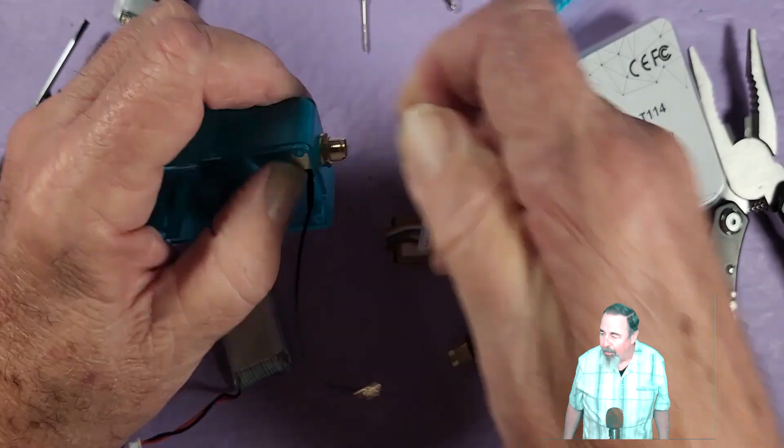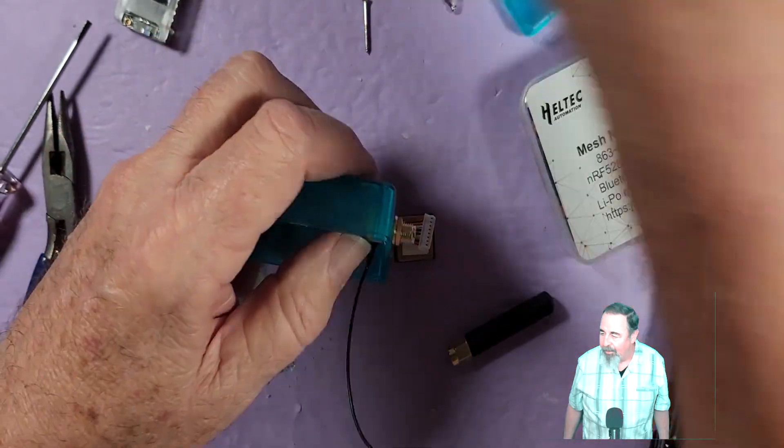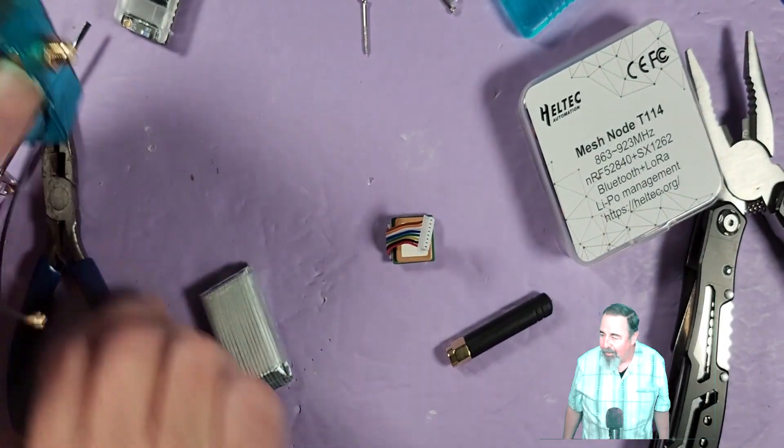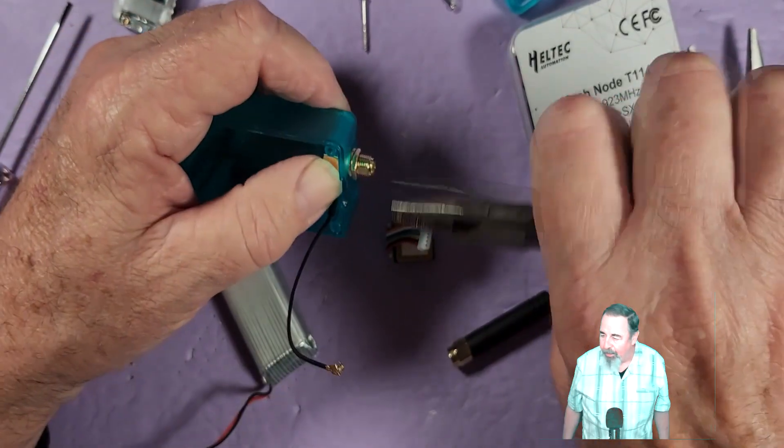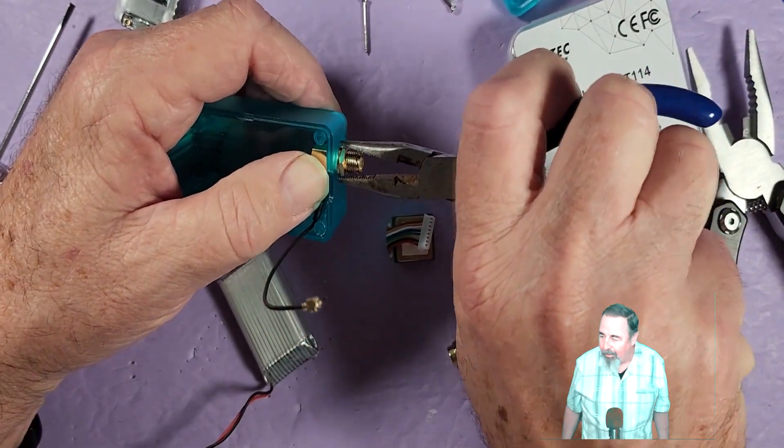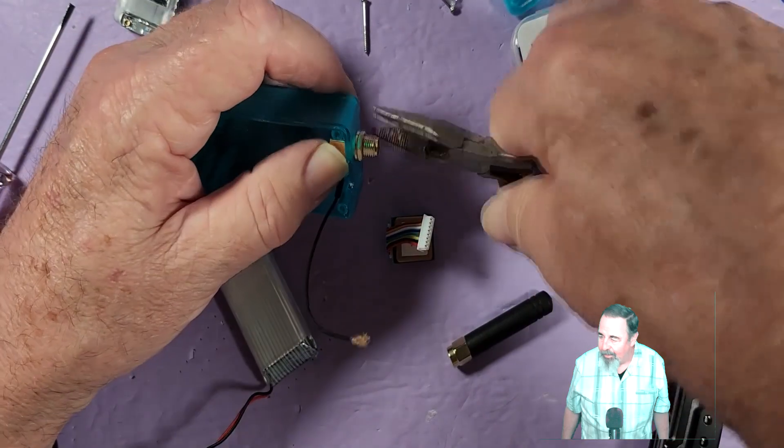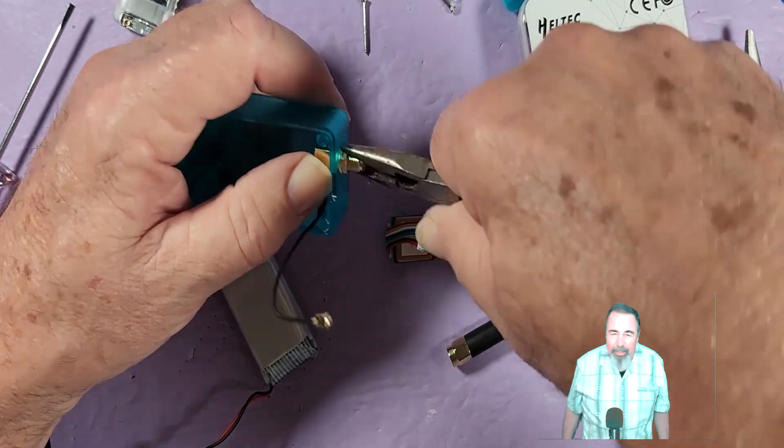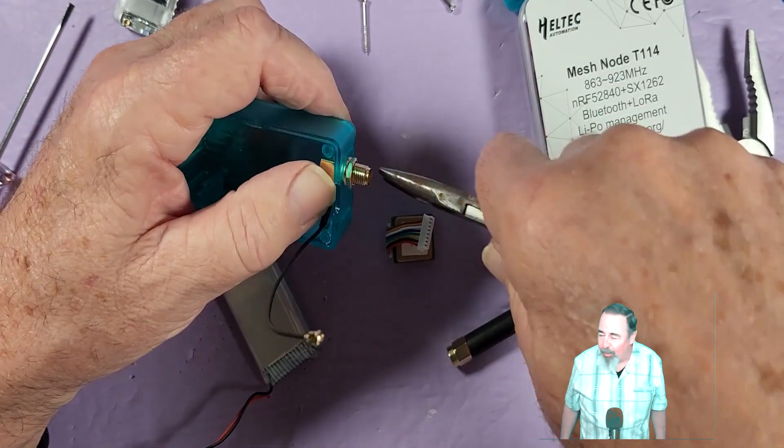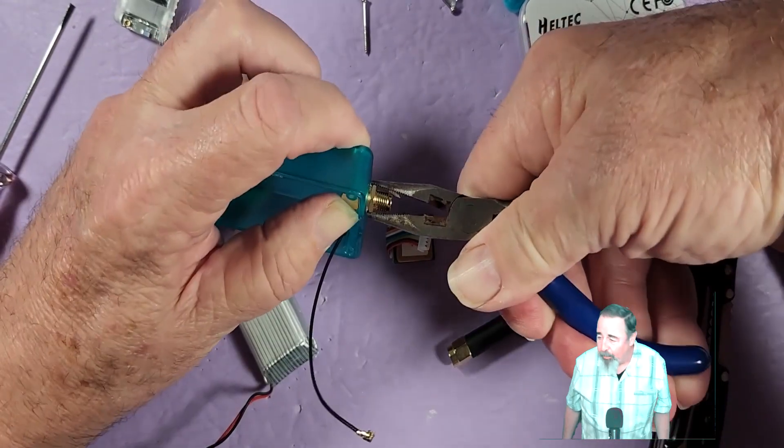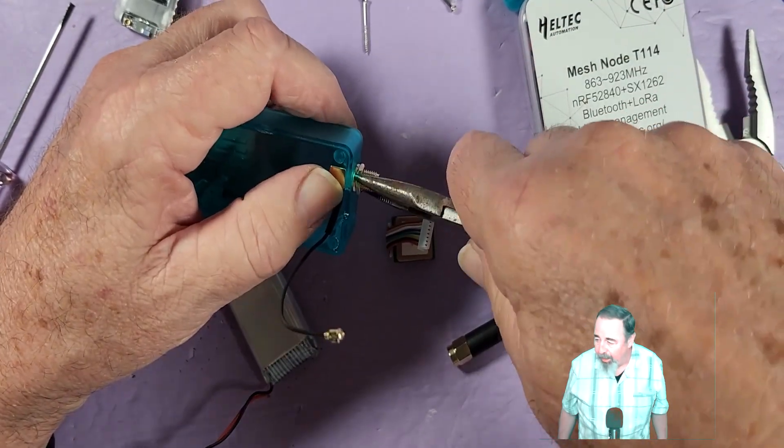So let's get our pliers now. You don't want that loose. If you want to change antennas and stuff, you don't want that loose. You want that nice and tight, always.